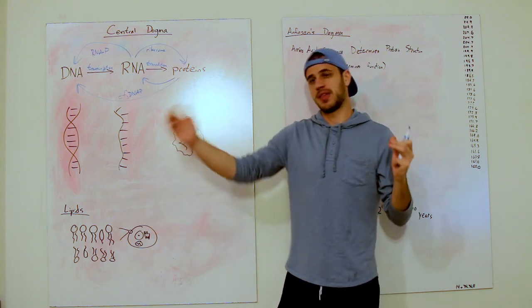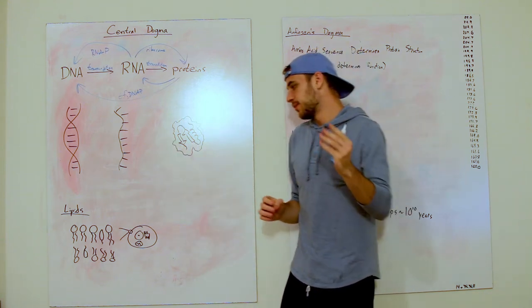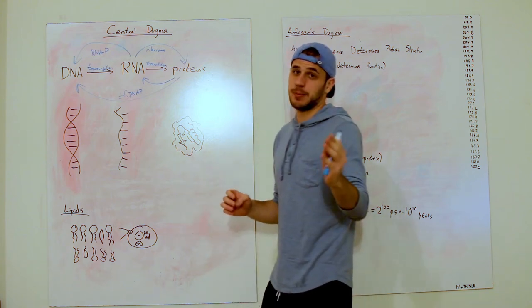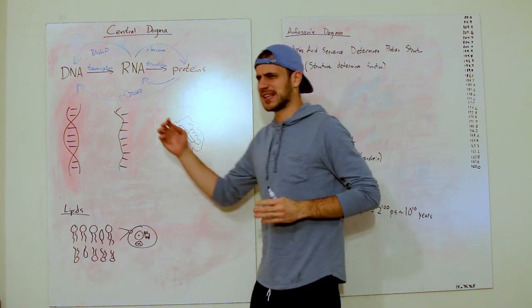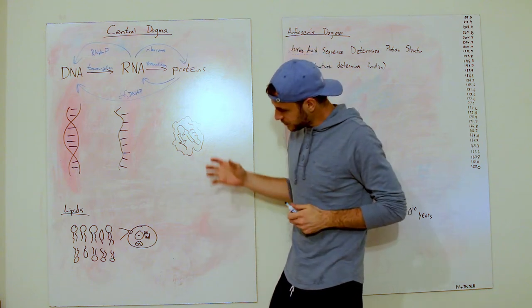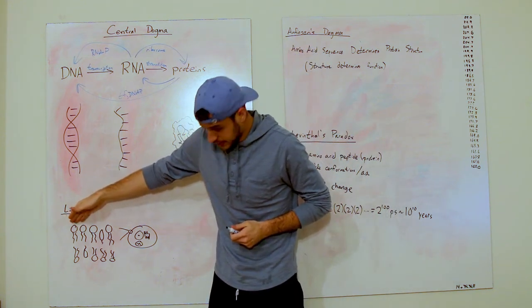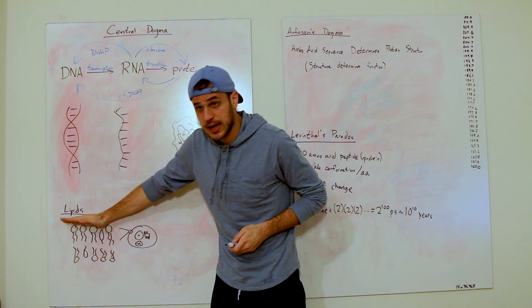These lipids are the boundary. They separate you from them. They separate the mitochondria, being the powerhouse of the cell, from everything that's not the powerhouse of the cell.